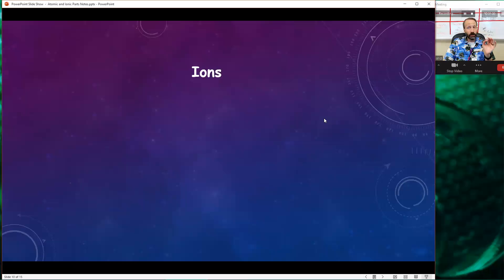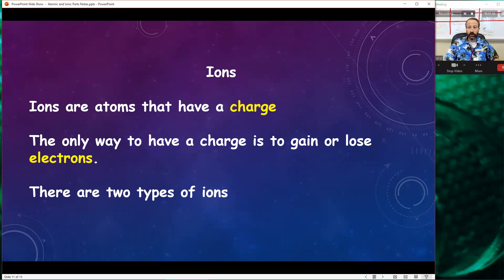Let's talk about ions because they are atoms, but they are special atoms. Ions are atoms that have a charge, so they're positive or negative. Now here's the catch - you want to be careful about this. The only way that an atom can get a charge is to gain or lose electrons. That's all that can be moved - electrons.